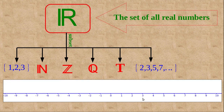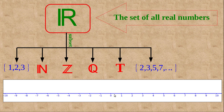The number line represents the set of all real numbers — every point on this line represents a real number. When we consider the subset {1, 2, 3}, or the natural numbers starting from one, there is a gap between any two consecutive numbers. Today we are going to learn a new type of subset in which there is no gap between any two elements.